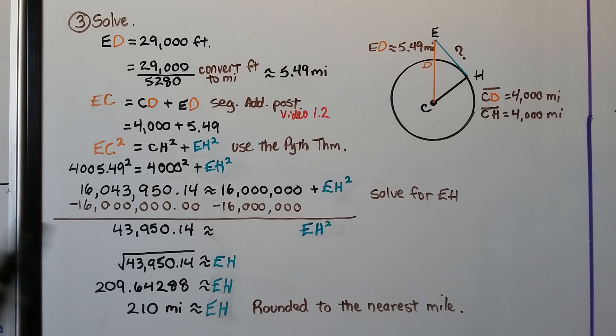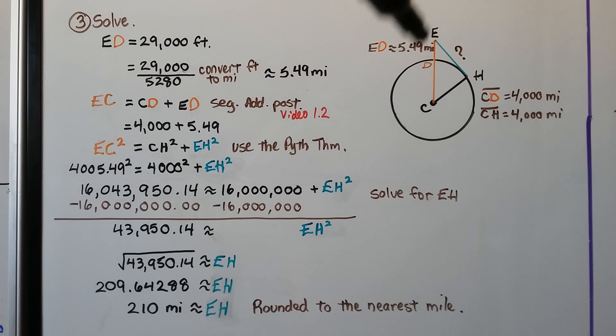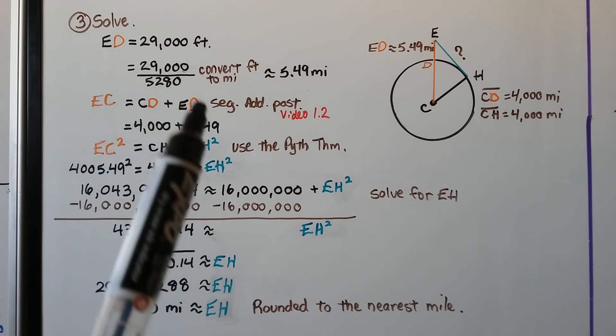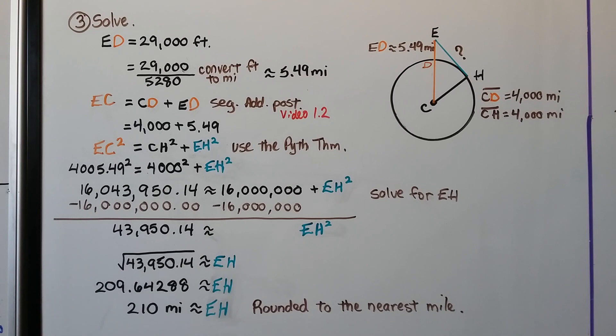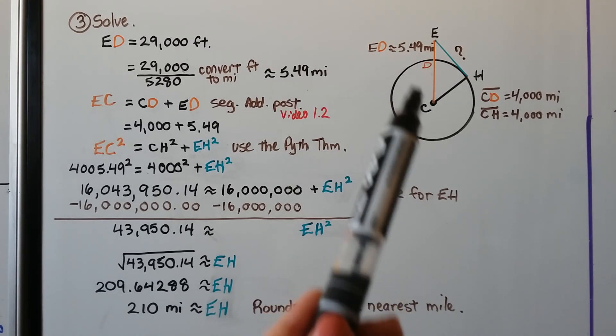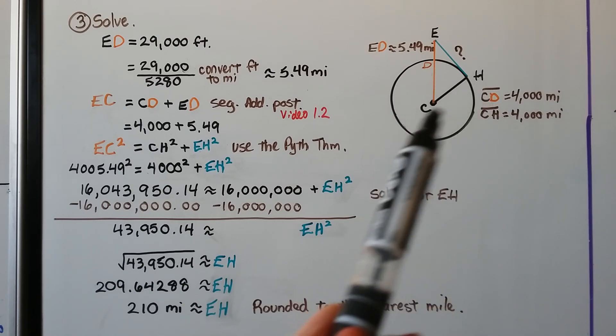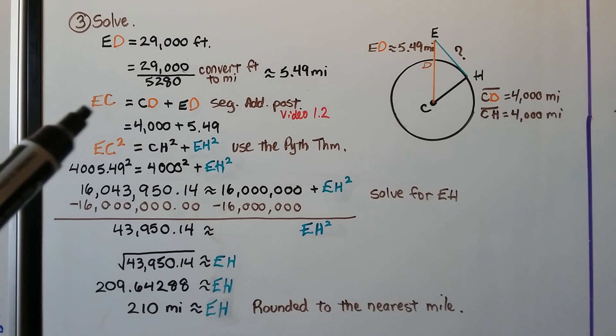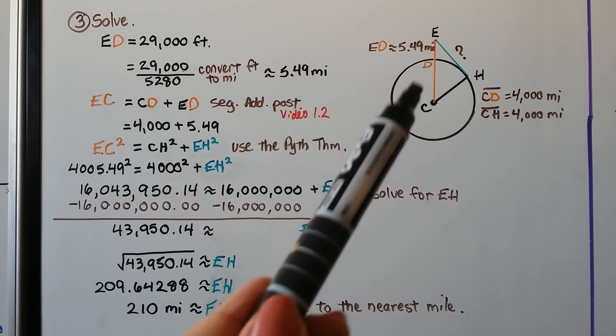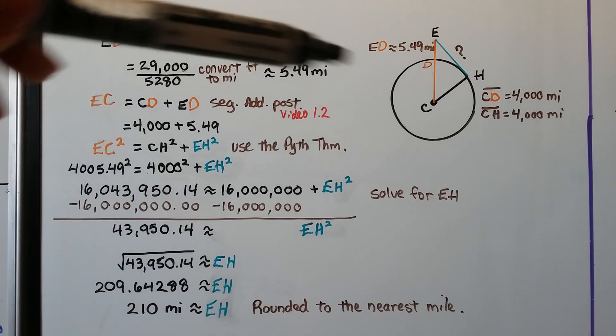Now we solve it. This little segment ED is 29,000 feet. That's from the horizon to the summit of Mount Everest. We need to convert the feet to miles. We know 5,280 feet is one mile, so that's our conversion factor. And we find that Mount Everest is approximately 5.49 miles from the horizon to its summit. We know CD is 4,000 miles, so CH must be 4,000 miles. They're both radii. We get EC, this entire orange line, is equal to CD plus ED. That's the segment addition postulate. So 4,000 plus the 5.49 equals EC.